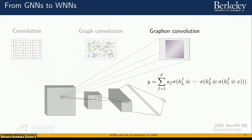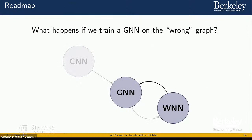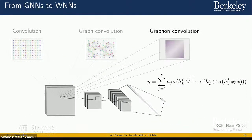The idea that graphon neural networks arise as limit objects of graph neural networks lets us go back to our original question. An audience member asks about the examples: the recommendation system is a dense problem, the flocking example is probably a nearest-neighbor graph so likely not dense, and the wireless communication example depends on topology. The speaker notes that the sparse case is ongoing work.